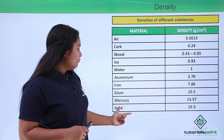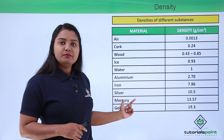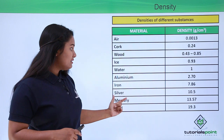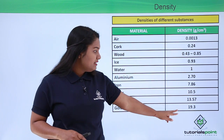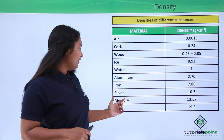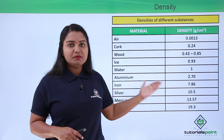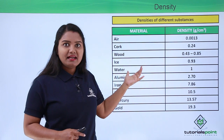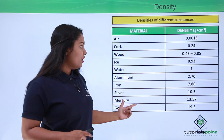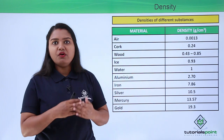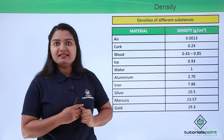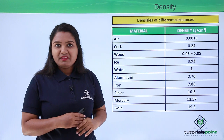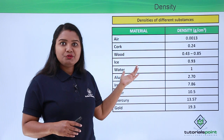Going further down the table, we have metals like aluminum, iron, silver, mercury, and gold, all of which have densities greater than that of water. The highest density is gold at 19.3 grams per centimeter cube, followed by mercury at 13.57 grams per centimeter cube. Substances listed above water in the table have densities less than water, while those below have densities greater than water. This property — density — plays a vital role when it comes to floating or sinking, and here lies the answer to our question.